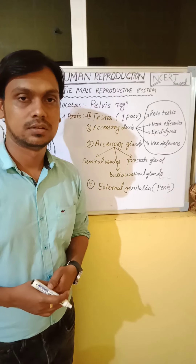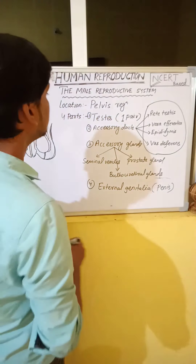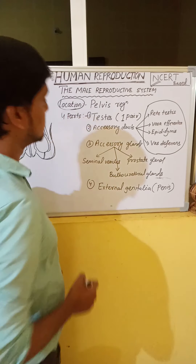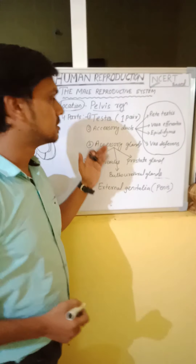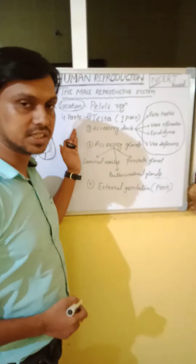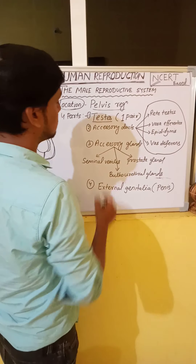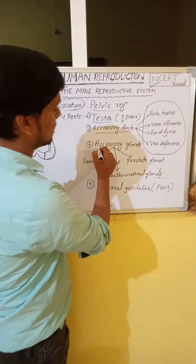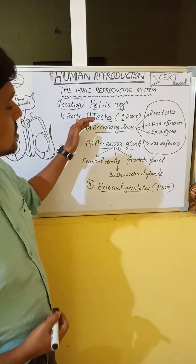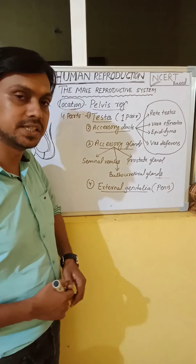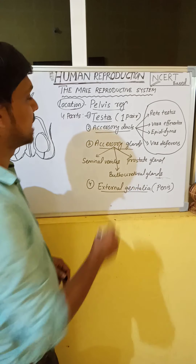This is the second video class on human reproduction, covering the male reproductive system. The male reproductive system is located in the pelvis region and includes four parts: testes, accessory ducts, accessory glands, and external genitalia. One pair of testes is present in males, and the testes are called the primary sex organ in males.